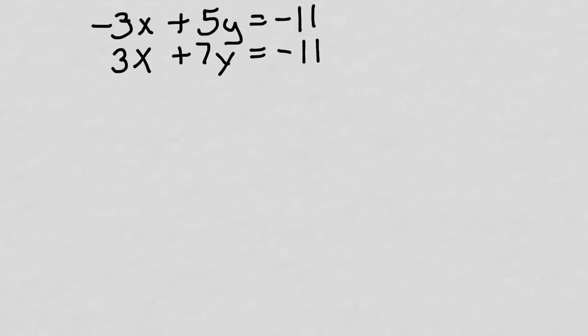System of equations — this is elimination, like we had for graphing and again with substitution. Here are two equations. This is like the first level of elimination — this is when you've got two numbers that are sort of like opposites. I've got negative 3x plus 5y equals negative 11, and I've got 3x plus 7y equals negative 1. I'm going to add these two equations together because the negative 3x and the 3x are opposites — if you add those together you get 0.